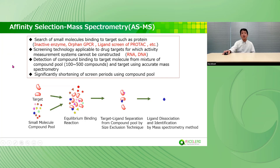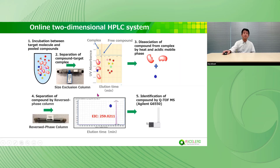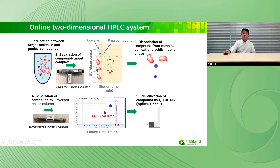We can detect compounds binding to the target molecule from a mixture of compound pools and targets using accurate mass spectrometry. We can significantly shorten our screening period using compound pools. We use an online two-dimensional HPLC system called ARIS. Target molecules and pool compounds are incubated, and the compound-target complex is separated by size exclusion chromatography. Compounds dissociated from the complex by heat and acidic mobile phase are then identified by LC-MS.